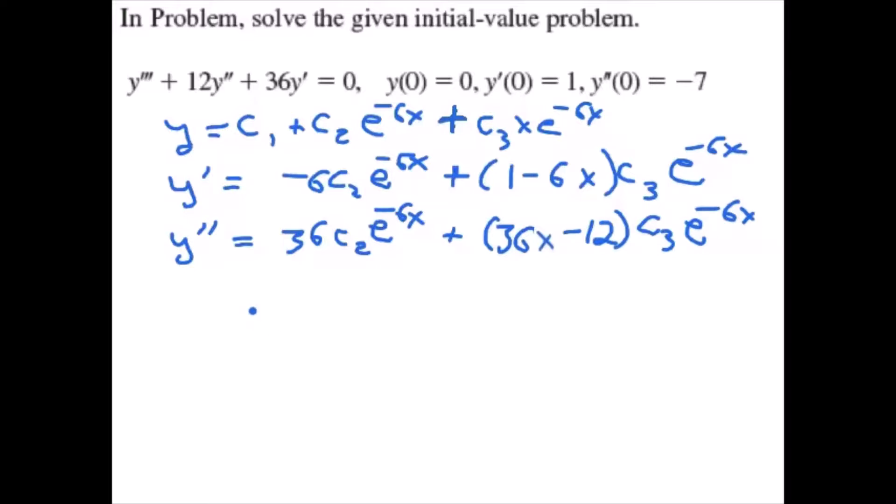From our initial conditions, y(0) = 0, so 0 = c₁ + c₂ (the exponential terms all go to 1). The second initial condition, y'(0) = 1, gives us 1 = -6c₂ + c₃.